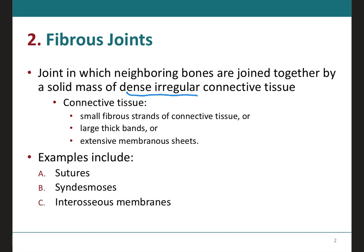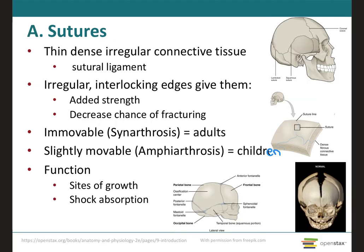This connective tissue can vary from being a small fibrous strand to a very large thick band to an even bigger extensive membranous sheet. There are three types of fibrous joints: sutures, syndesmosis, and interosseous membranes. Starting with sutures, which are fibrous joints composed of a very thin layer of dense irregular connective tissue called a sutural ligament.